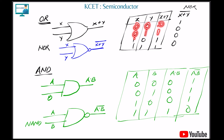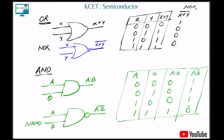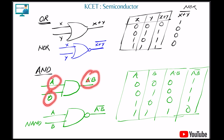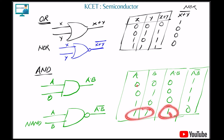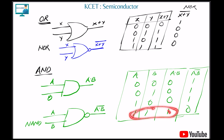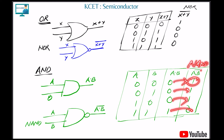The OR gate is like addition: 0+0=0, 0+1=1, 1+0=1, 1+1=1. The NOR gate is an OR gate followed by a NOT gate, so all outputs are inverted. The AND gate multiplies A·B: both inputs must be true to get a true output — 0·0=0, 0·1=0, 1·0=0, 1·1=1. The NAND gate inverts AND outputs: 0 becomes 1, 0 stays 0, 0 stays 0, 1 becomes 0.